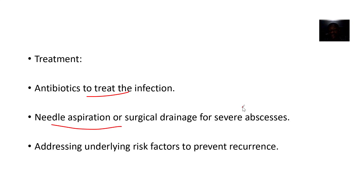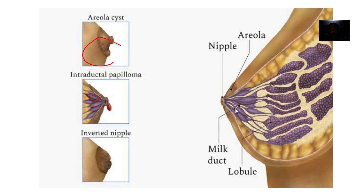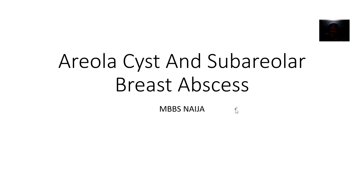Treatment: since there is a pus collection with bacterial infection, antibiotics are given. Nipple aspiration or surgical drainage is used for severe abscesses. Addressing the underlying risk factors is important to prevent recurrence. That concludes these two breast conditions.